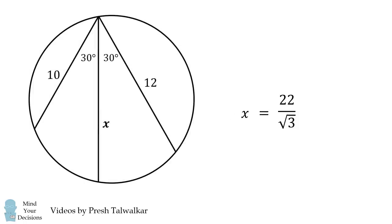And if we go back to the original diagram, there's another way that we can write it. x is equal to the simple average of 10 and 12 divided by the cosine of 30 degrees.